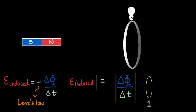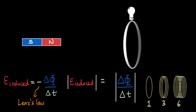If we have only one loop and the magnetic flux through it changes, the EMF induced equals the rate of change of magnetic flux through that loop. If we have three loops, EMF is induced in each loop and the total EMF equals the sum of the EMF from each loop — so we add the rate of change of flux three times. For six loops, the same principle applies. In general, if we have n loops, we multiply the rate of change of flux by n to get the total induced EMF.